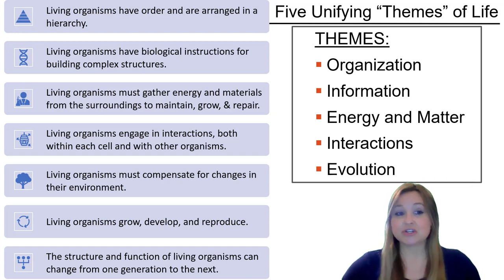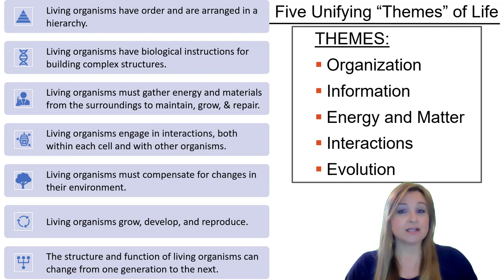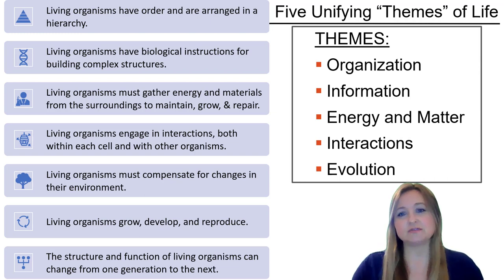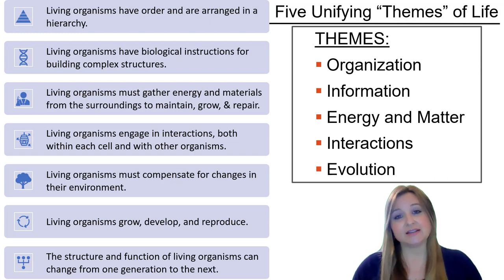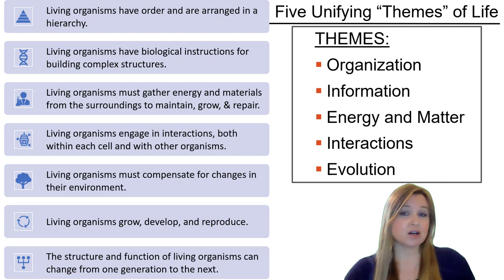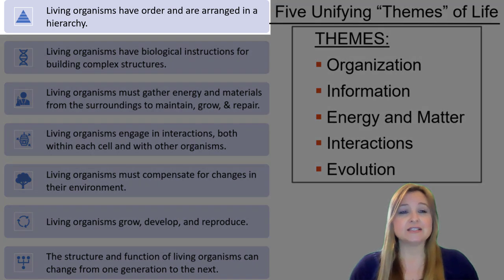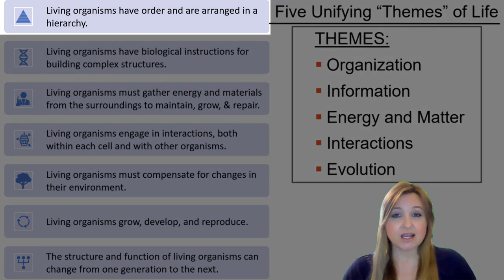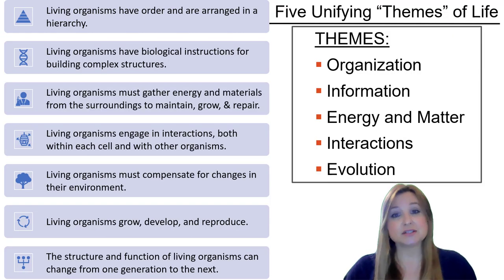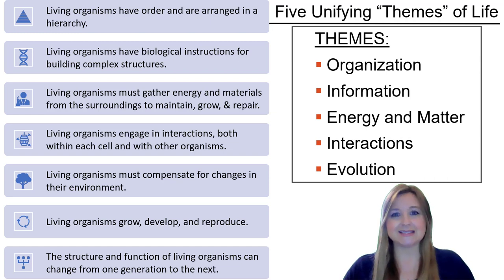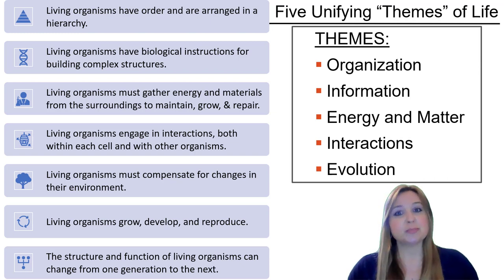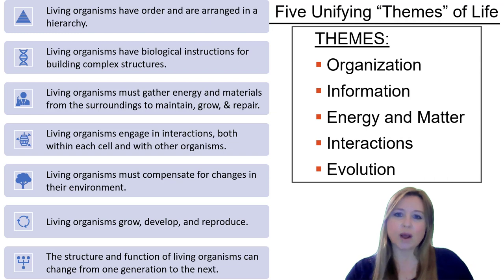We talked about the seven characteristics shown here on the left that all living things must satisfy in order to be considered alive. We've also talked about in a prior video how these seven characteristics fit into five basic themes of life: organization, information, energy and matter, interactions, and evolution. In today's video, I want to talk about the first characteristic of living things — that living organisms have order and are arranged in a hierarchy — and specifically about what emergent properties are.